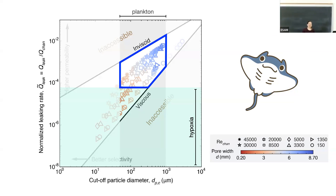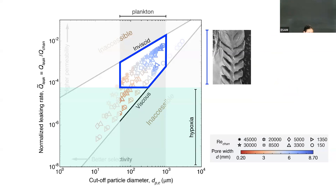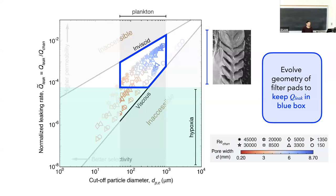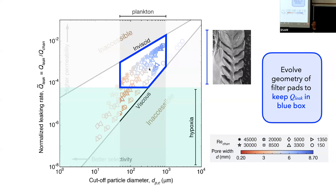Now I have defined the math question I have to answer: if I'm a manta evolving these structures to some size scale, how do I pick the geometry of this structure such that my Q_leak - the volume of leakage - is within this blue box? Everything moving forward is about how do I predict Q_leak given the other interesting pieces of this problem. Once I know Q_leak, I can start to dial those parameters and say that's where the manta wants to sit.